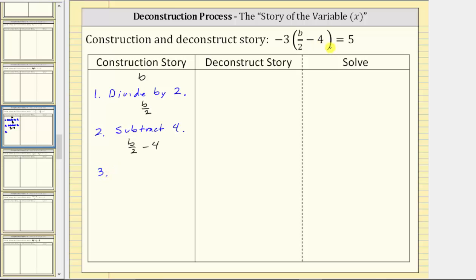For step three, notice how this difference is being multiplied by negative three. Step three in the construction story is multiply by negative three. If we multiply this difference by negative three, we really have this difference times negative three, but using the commutative property of multiplication, we can change the order of the product and write the product as negative three times the quantity b divided by two minus four.